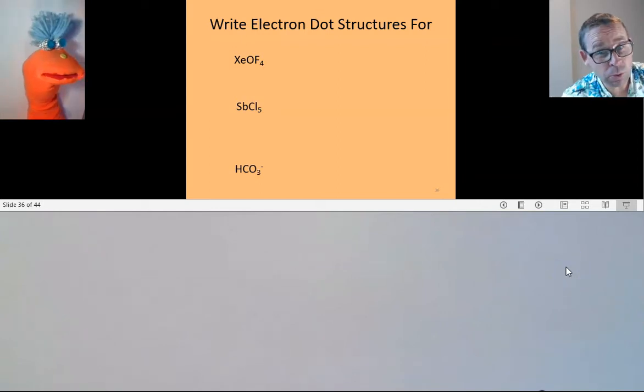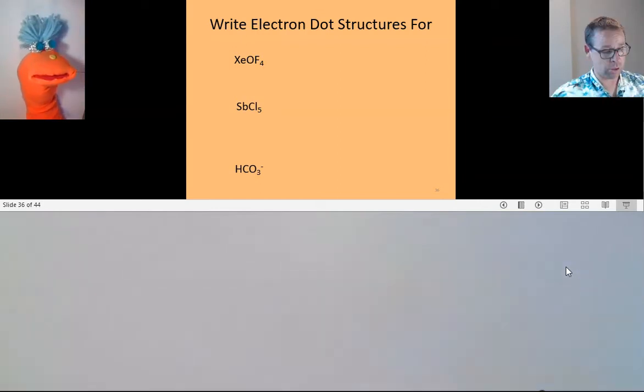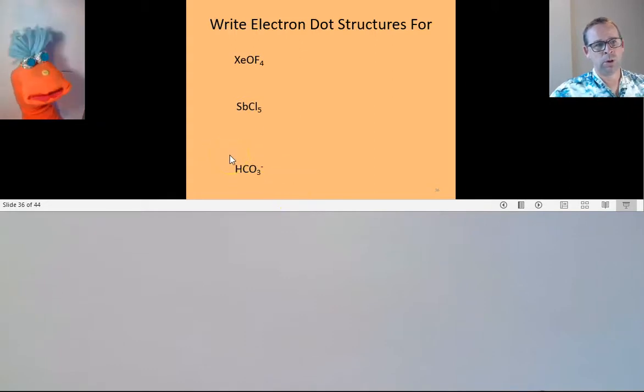Okay, so on the previous video, we solved the Lewis dot structure for our first two compounds here. But now we're going to solve the Lewis dot structure for a polyatomic ion. Do you recognize this polyatomic ion? I sure do. It's one of my favorites. What's it called? I can't actually remember. Let me look at my list. The bicarbonate ion. That's right, bicarbonate ion. Very good.